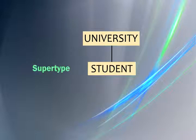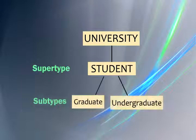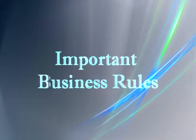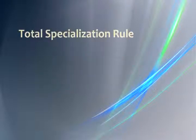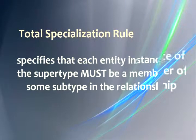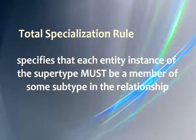Two subtypes of student are graduate student and undergraduate student. There are several important business rules for supertype-subtype relationships. The total specialization rule specifies that each entity instance of the supertype must be a member of some subtype in the relationship.